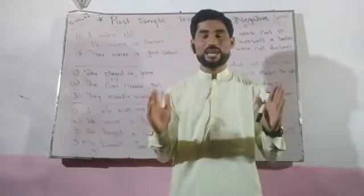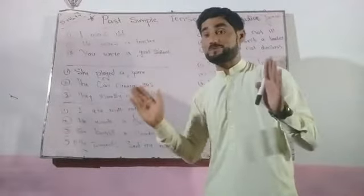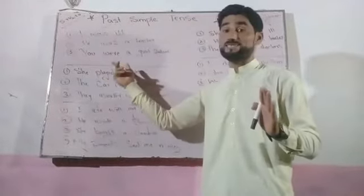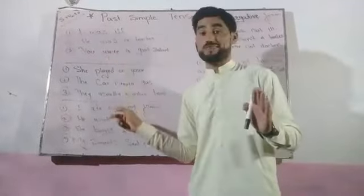The next sentence is 'He was a teacher.' I started with the subject 'he' and used 'was', the past form of 'be'. Then: 'You were a good student.' Here I used the subject 'you', therefore I used 'were', not 'was'. With 'you', 'we', and 'they', we use 'were', not 'was'. So: 'I was...', 'He was a teacher', 'You were a good student' — that was the first usage.